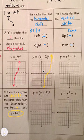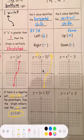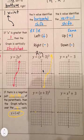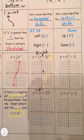When we have (x plus 3) cubed, that means it shifts to the left 3. Remember: x lies, so (x minus h) with a negative h shifts right, and (x plus 3) shifts left 3.